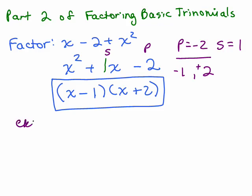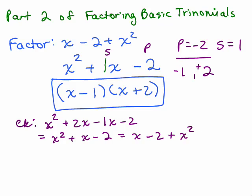Now we can do a simple check. Let's do the FOIL method: x squared plus 2x minus 1x minus 2 equals x squared plus x minus 2. If we look at the original, it was written as x minus 2 plus x squared and yes, those are exactly the same thing because of the commutative properties.